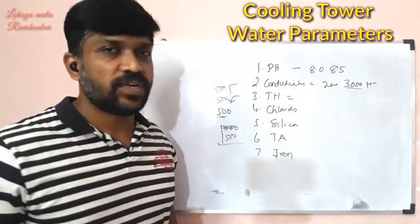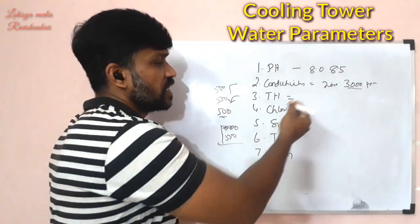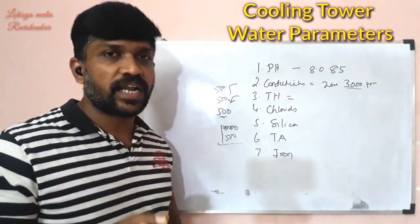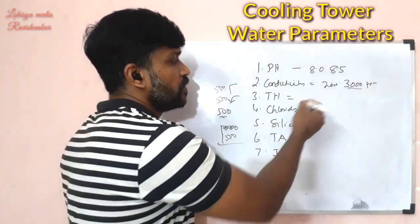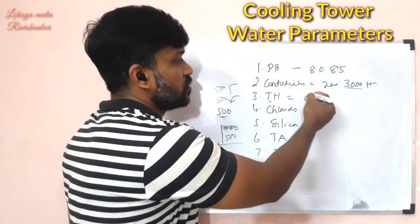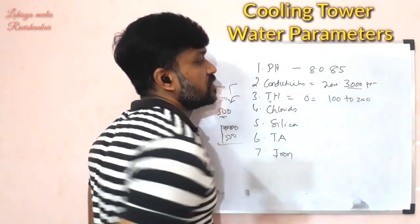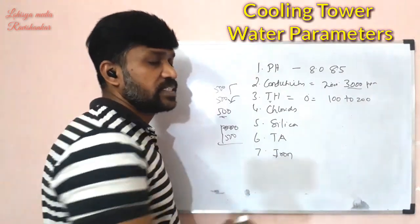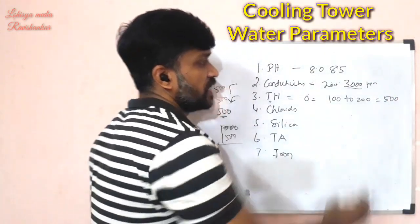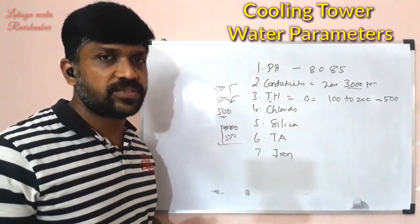For total hardness, if you use soft water, the hardness will be near zero, but we can maintain 100 to 200 PPM. If you use harder water, total hardness can go above 500 PPM, so we need to monitor this carefully.